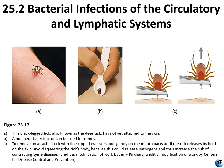The black-legged tick, also known as the deer tick, is not yet attached to the skin here. A notched tick extractor can be used for removal. To remove an attached tick with fine-tipped tweezers, pull gently on the mouth parts until the tick releases its hold. Avoid squeezing the tick's body, as this could release pathogens and increase the risk of contracting Lyme disease. Grab it by its mouth parts, not its body, to avoid ripping the body off and leaving the head stuck in the skin.